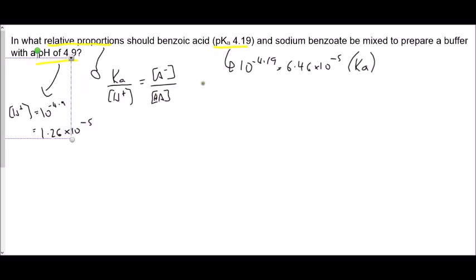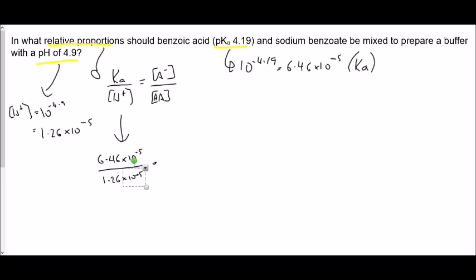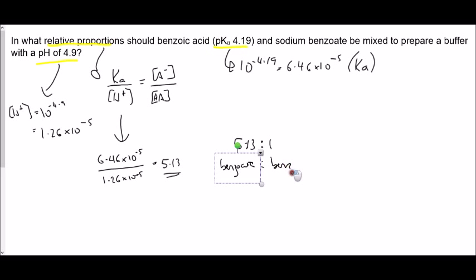Then all we need to do is substitute those numbers in. And that's our final answer — the ratio is 5.13 to 1 of benzoate, or sodium benzoate, to benzoic acid.